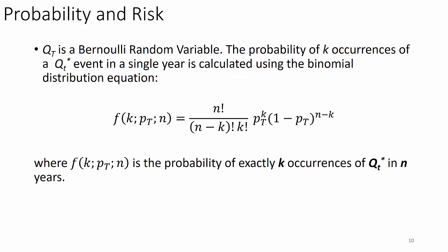Q-sub-T is a Bernoulli random variable. The probability of exactly K occurrences of a particular event Q-sub-T-asterisk in a single year is calculated using the binomial distribution equation: f(K, P_T, N) equals N-factorial over (N minus K)-factorial times K-factorial, times P_T to the K, times (1 minus P_T) to the (N minus K). This gives the probability of exactly K occurrences of event Q-asterisk-T in N years.